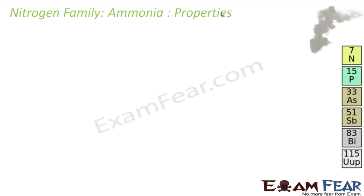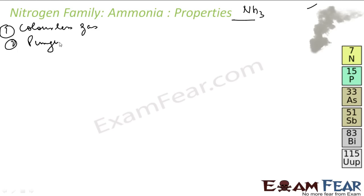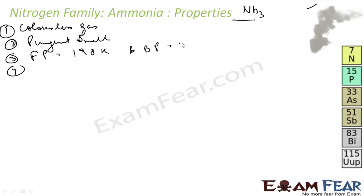Now we talk about the properties of NH3. Ammonia is a colorless gas but it has a very bad, pungent smell. The freezing point is 198 Kelvin and the boiling point is 239.7 Kelvin. It has relatively high melting and boiling points because of hydrogen bonding. Nitrogen is more electronegative than hydrogen and attracts electrons towards itself.